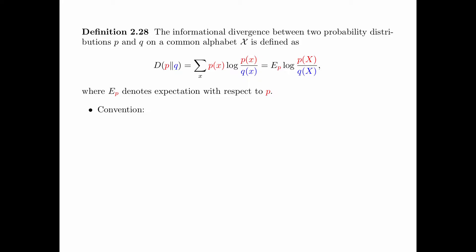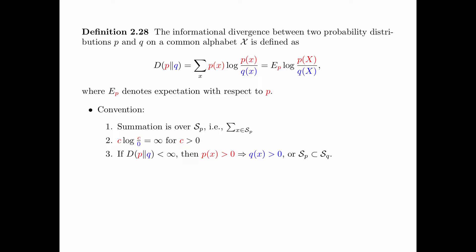In the above definition, we take the following conventions. First, the summation is over the support of p — namely, summation over x refers to summation over x in S_p. Second, for any constant c greater than 0, c log(c/0) is equal to infinity. Therefore, if D(p||q) is less than infinity, then p(x) > 0 implies q(x) > 0, or the support of p is a subset of the support of q.